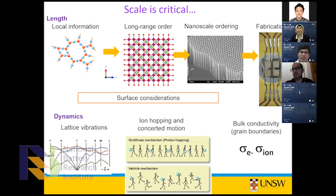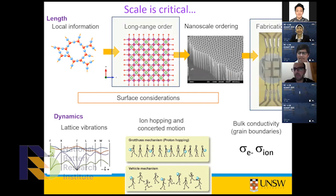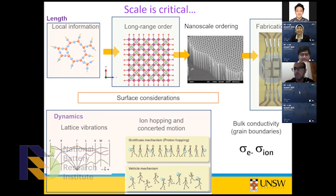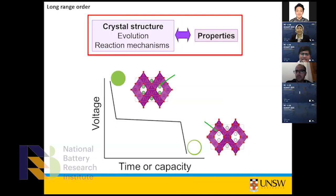Choosing the right scale — and often multiple scales — to characterize materials and characterize materials in devices is ideal. A lot of work in my group has been on long-range order in crystalline materials in full cells, but we are also doing a lot more on local information using solid-state NMR, pair distribution function analysis, and dynamics using spectroscopy — inelastic and quasi-elastic neutron spectroscopy, Raman spectroscopy, and similar techniques.